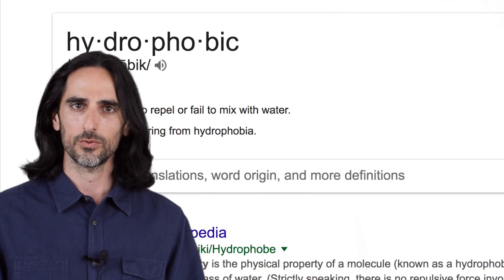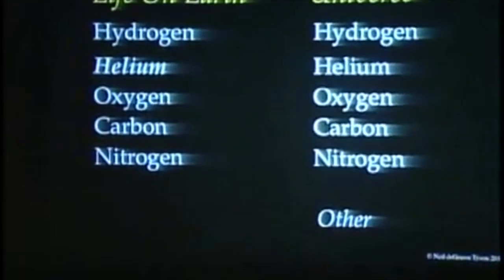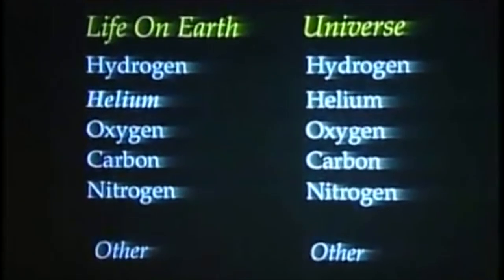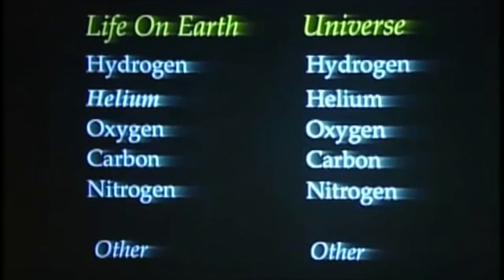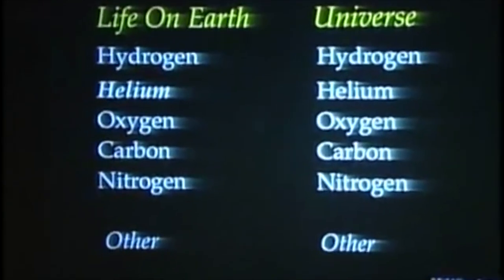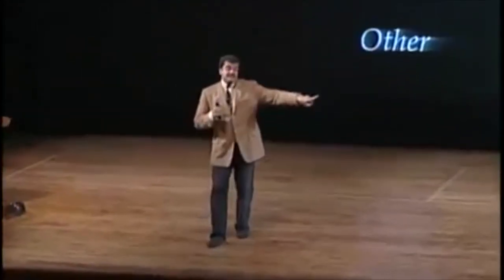The most abundant ingredient in life on Earth is oxygen, next carbon, next nitrogen — and together we are made of the same ingredients that appear in the universe. If we were made of an isotope of bismuth you might say we're different, but we are the same as the universe. These elements are forged in the centers of stars.